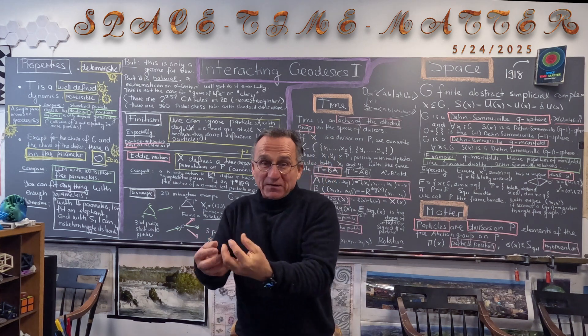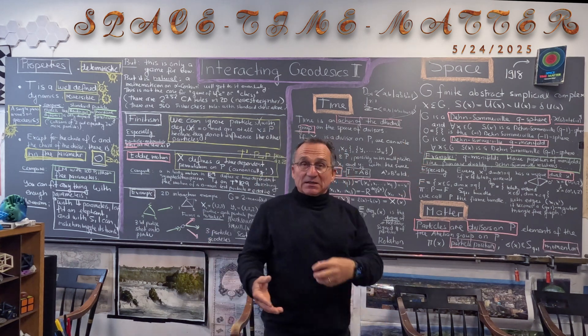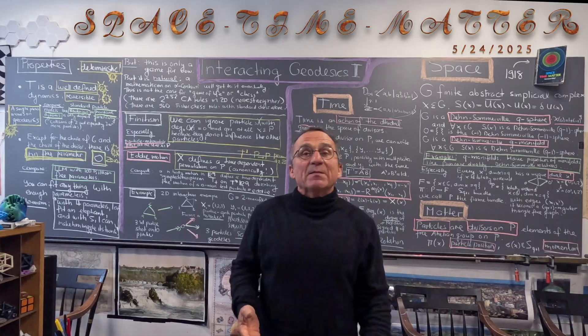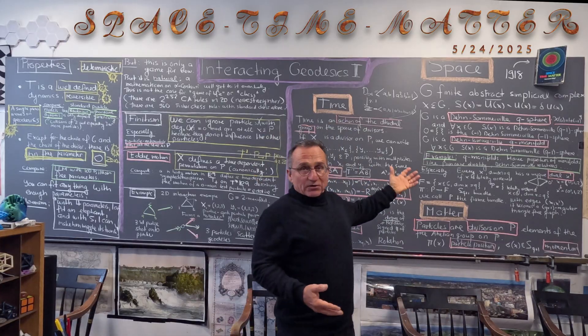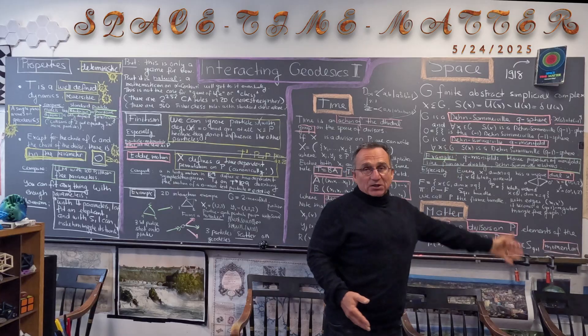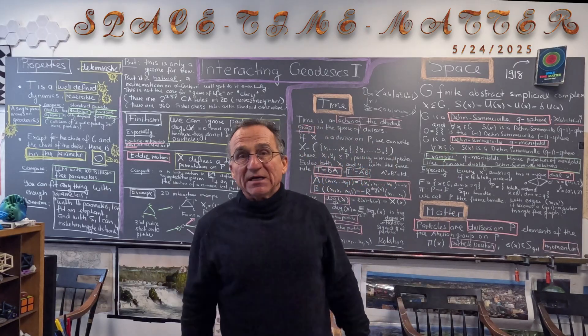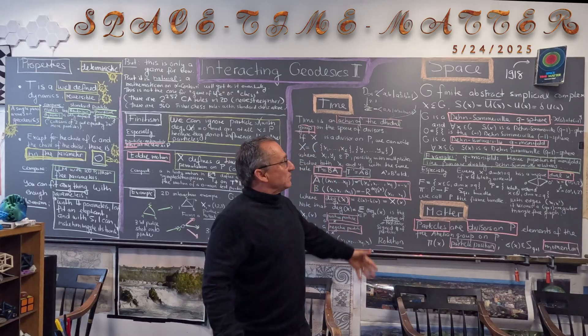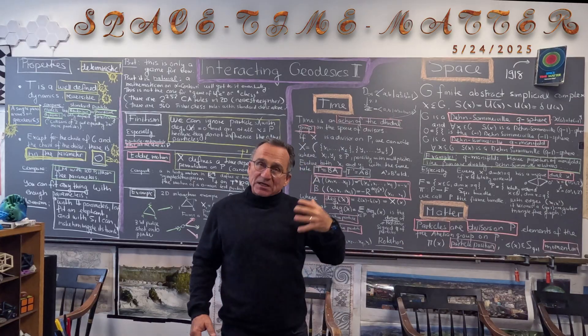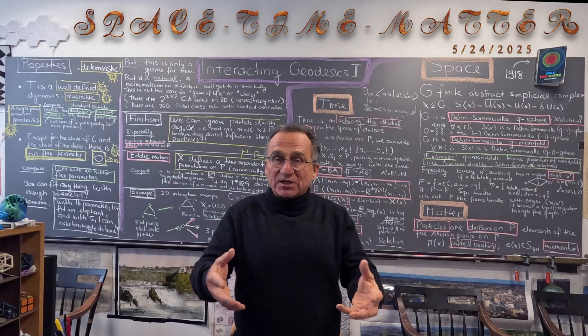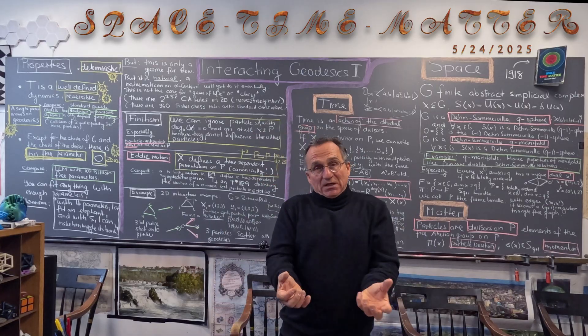The induction assumption is that 0 is a minus 1 generalized sphere, and then you define a Q-manifold like before that every unit sphere should be a Dane Somerville sphere. So, it's a very natural thing and in two dimensions the first time it becomes a little bit more interesting.